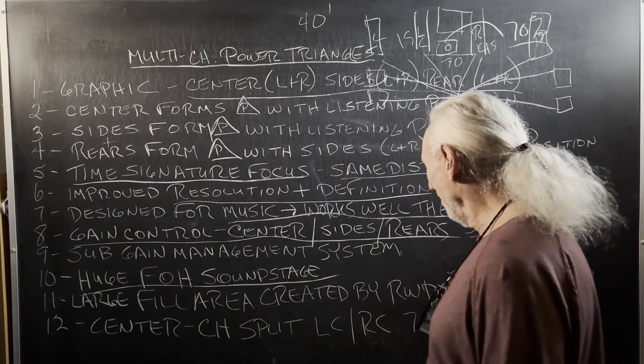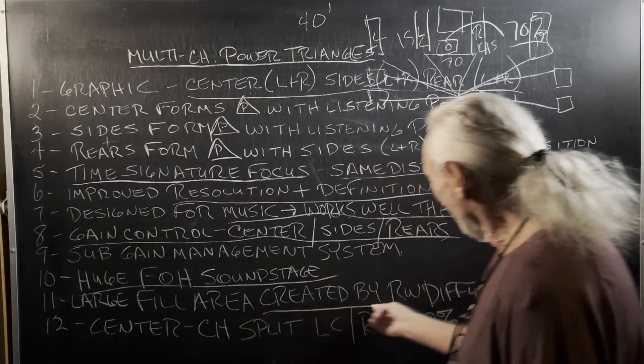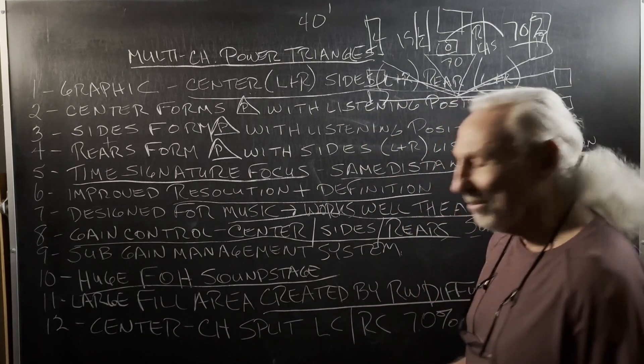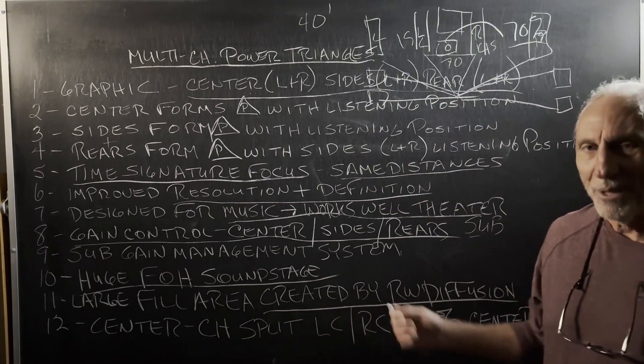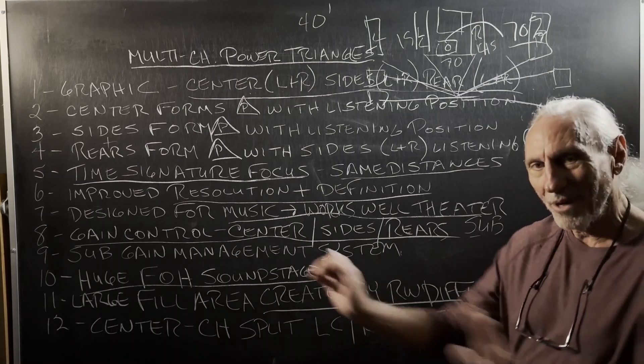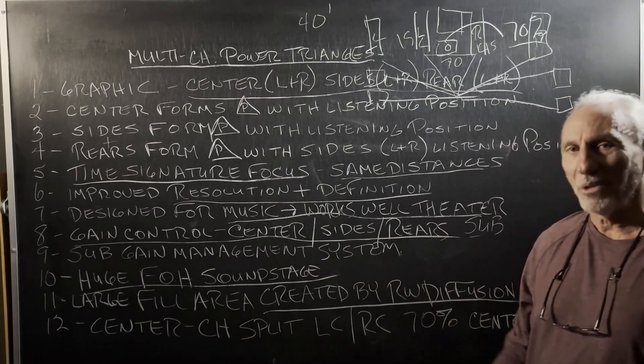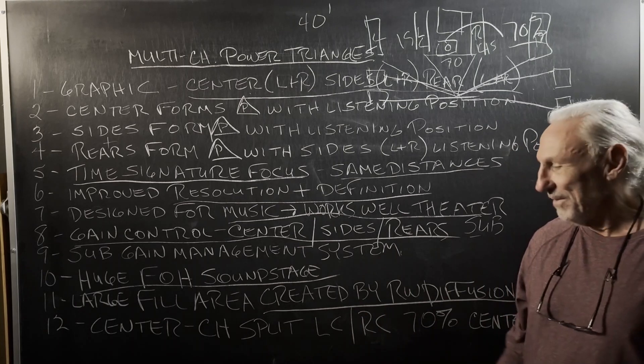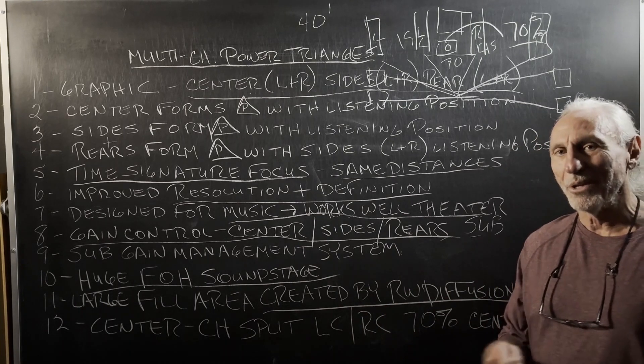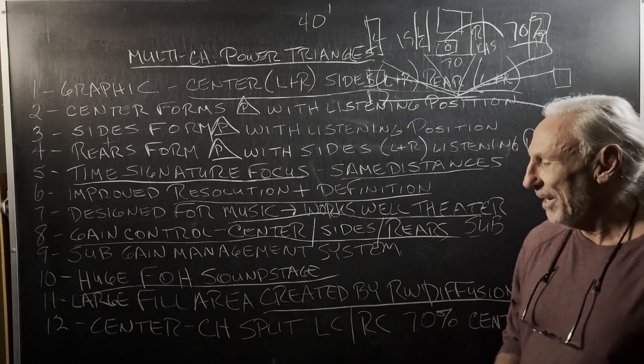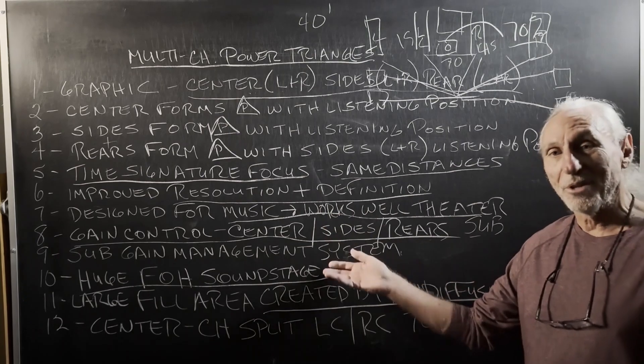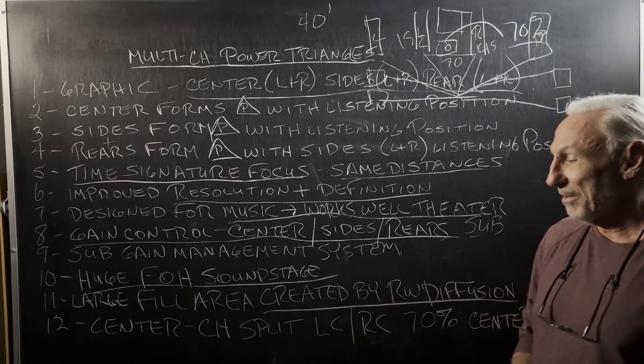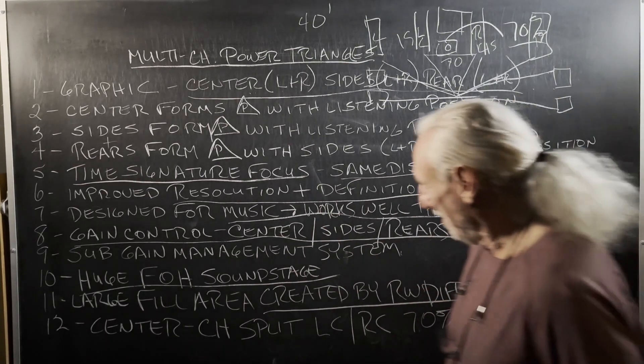So when you put diffusion on the rear, you get rid of the rear wall psychoacoustically. It sounds farther back than it is. You can't localize it as easy. Good. So that's what we want. Now we're going to put diffusion on the front wall and we'll talk about how that works. And then we'll put diffusion on the sidewalls and we'll talk about how that works.